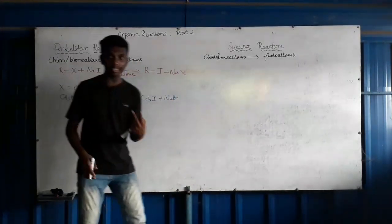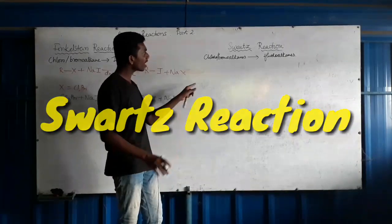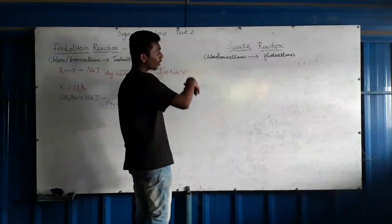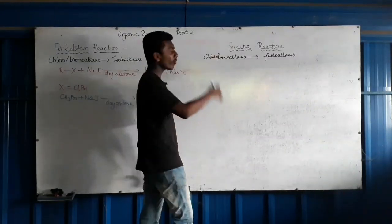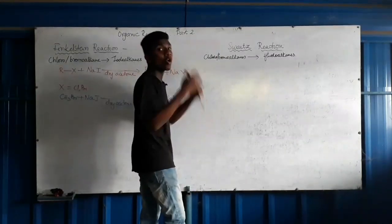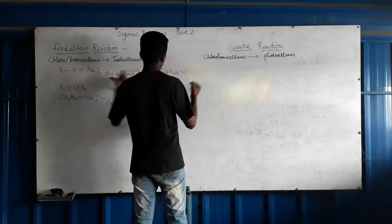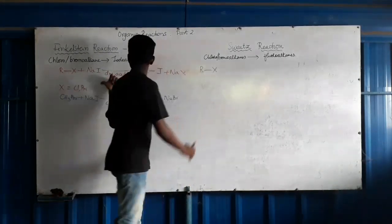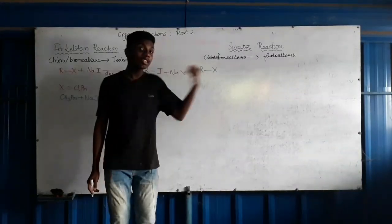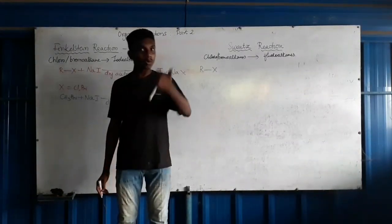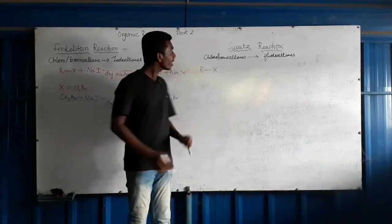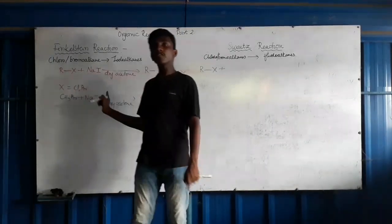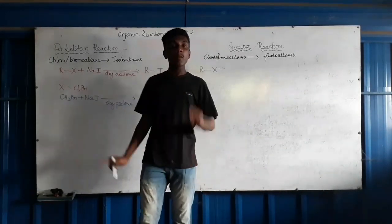The second reaction is the Swarts Reaction. It is simple — you can prepare alkyl fluorides from chloro-alkanes and bromo-alkanes. The same equation RX is used, but here we do not add sodium fluoride. Instead, we use a metallic fluoride.